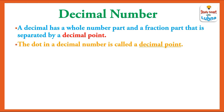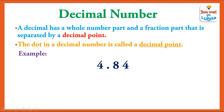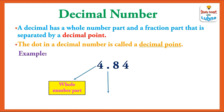The dot in a decimal number is called a decimal point. For example, a decimal number is given that has two parts: the whole number part, the decimal point, and a fraction part. Here, 4 is the whole number part, the dot is the decimal point.